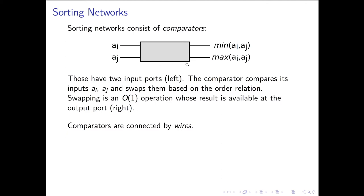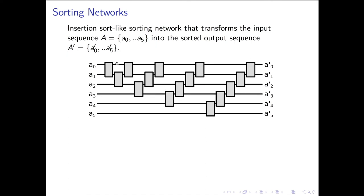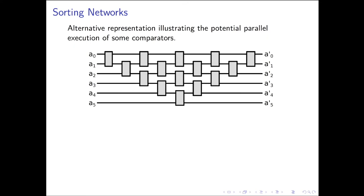Comparators have ports similar to what we'd find in an integrated circuit. The comparator compares the two input elements and potentially swaps them, so at the output ports we have the minimum and the maximum. Given those comparators, we can connect them using wires. This here is a sorting network that corresponds to the insertion sort algorithm for a fixed input length of six — if we apply an input sequence to the wires at the very beginning and subject it to all the comparators, the sequence will be sorted at the end.